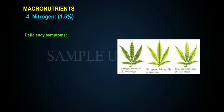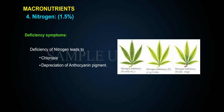Deficiency symptoms: Deficiency of nitrogen leads to chlorosis, decreased anthocyanin pigment, delayed flowering, and underdeveloped fruits.